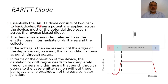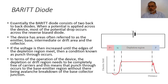The BARITT diode consists of two back-to-back diodes: we have PN here and NP here. When the potential is applied across the device, most of the potential drops across the reverse biased diode. So the electric field of the potential is mainly in the region of the reverse biased diode, and effectively it is mainly in the depletion region.